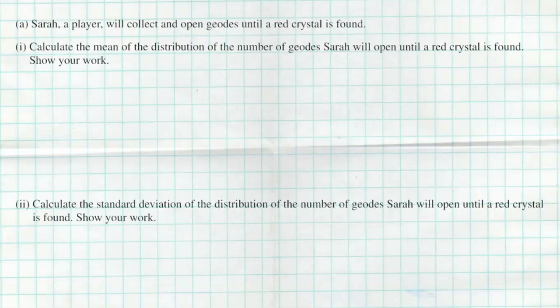Let's dive into the first set of questions, Part A. Sarah, a player, will collect and open geodes until a red crystal is found. That phrase 'until a red crystal is found' tells me very clearly that we have a geometric distribution, because we're only going to stop once we get our first red crystal. That's all Sarah cares about — getting that first red crystal.